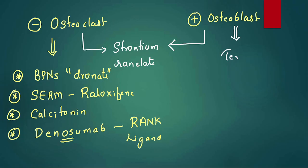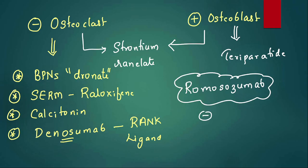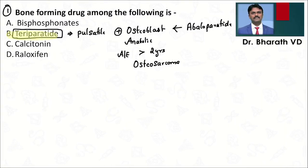The drug that stimulates osteoblast is teriparatide. One update for NEET PG: a new drug called romosozumab is also used for osteoporosis — it inhibits sclerostin and has dual action, meaning it can inhibit osteoclast and stimulate osteoblast. So the answer is teriparatide, and more than two years of usage can increase the risk of osteosarcoma.